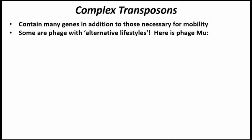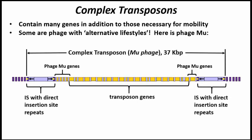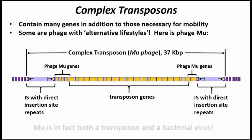So-called complex transposons look a bit like a TN element, but usually contain many genes in addition to those necessary for mobility — those are the yellow boxes in this illustration. Some complex transposons resemble a bacteriophage, and mu is in fact a bacterial virus which can function either as a transposon moving within the bacterial genome, or as a phage able to lyse the cell and infect new cells.